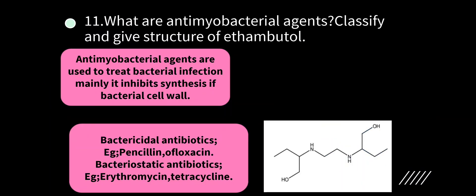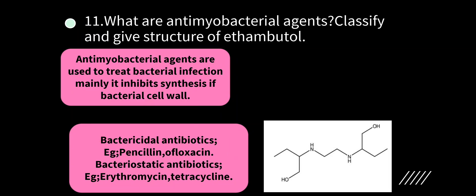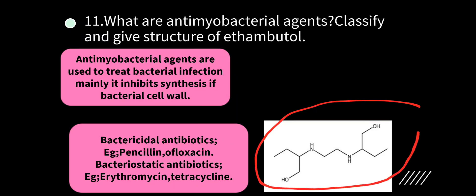Eleventh question: what are antimycobacterial agents? Classify and give the structure of ethambutol. Antimycobacterial agents are antibacterial agents used to treat bacterial infections — mainly they inhibit the synthesis of the bacterial cell wall. Classification: bactericidal antibiotics (e.g., penicillin, ofloxacin) and bacteriostatic antibiotics (e.g., erythromycin, tetracycline). The structure shown is ethambutol, which is especially used to treat tuberculosis.